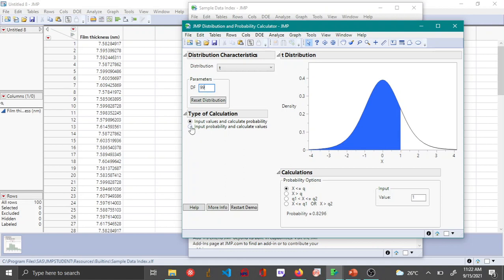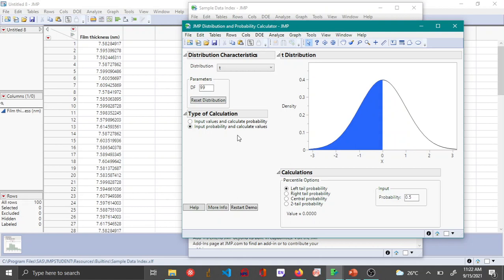Here you will be inputting the probability, and in this case we know that the probability is 0.95 since we are calculating the 95% confidence interval, and also we'll be calculating the central probability.